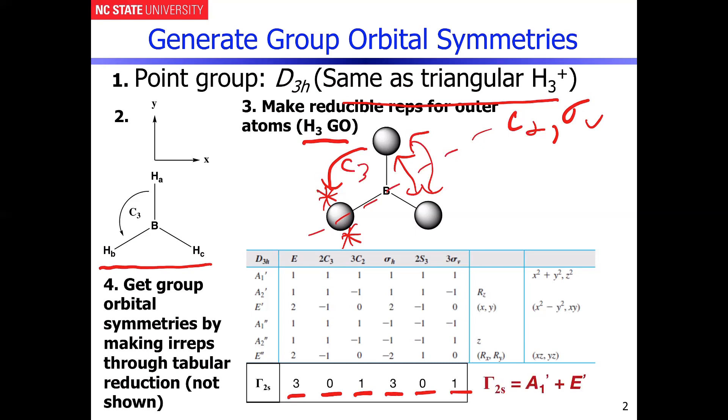So when you do that full reduction and applying tabular reduction to this problem, you will wind up with an IREP now, or two IREPs. One of them is A1 prime, and the other one is E prime.